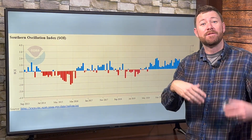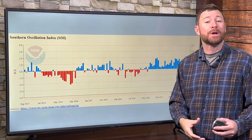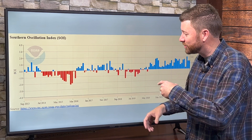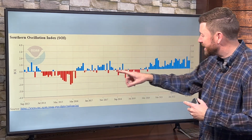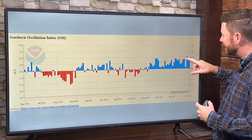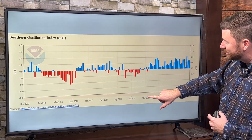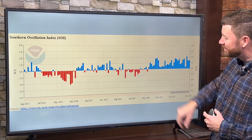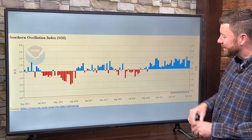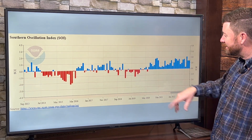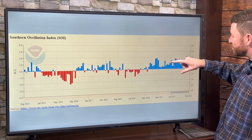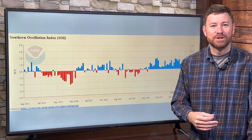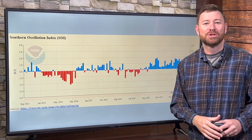Those waves could send conditions to neutral or even perhaps promote an El Nino at some point. Looking at the SOI timeline, we've been persistently in the La Nina phase — May 2020 was topsy-turvy between El Nino, neutral, and La Nina — but it's been persistently La Nina matching the ocean conditions for roughly the last three years.